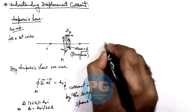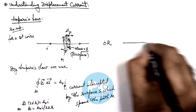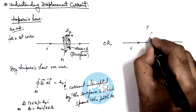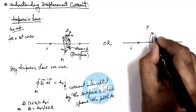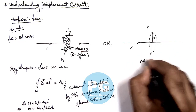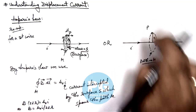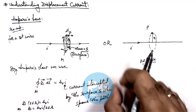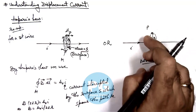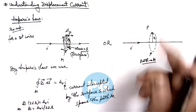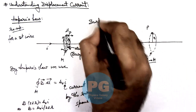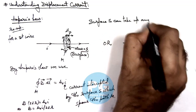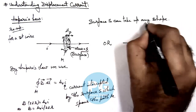We can also change the application. In the same situation with current I flowing in the wire, and at point P we consider a loop of radius R — path M — for applying Ampere's law we need to find the current intercepting the surface S which spans path M. Now, surface S can take up any shape — this is very important to understand.